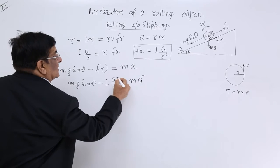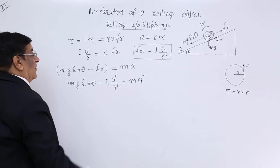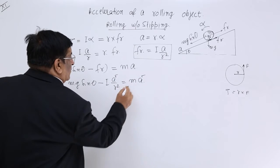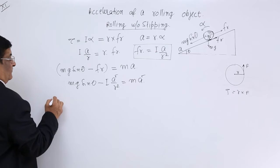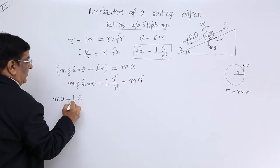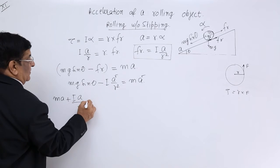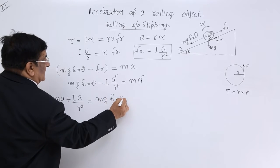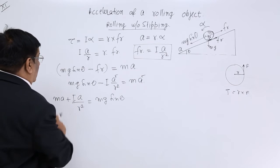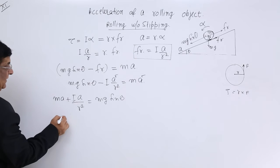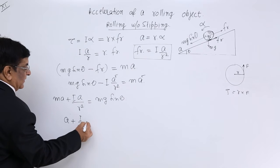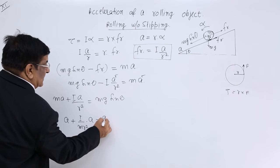This gives us the acceleration A with which the body comes down. Rearranging all terms with A on one side: MA plus IA upon R squared equals Mg sin theta. Dividing both sides by M: A plus I upon MR squared into A equals g sin theta.